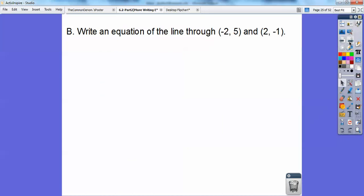Write an equation of the line that goes through these two points, negative 2, 5, and 2, negative 1. First you've got to find the slope. I've got negative 6 fourths. Don't forget to reduce it to get negative 3 halves.